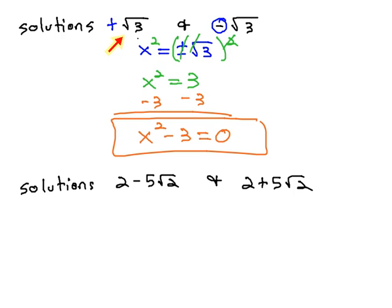We found that equation by writing the shorthand with the plus or minus, and then squaring both sides to get rid of the radical and the plus or minus.